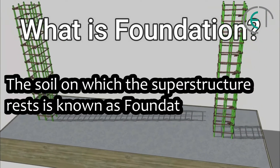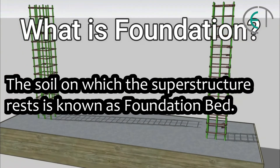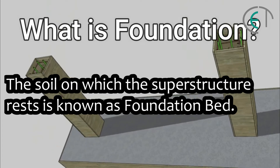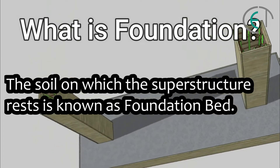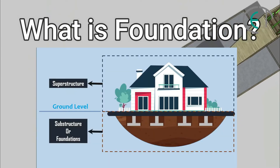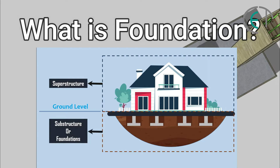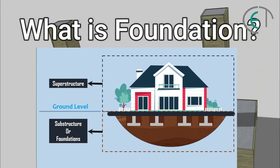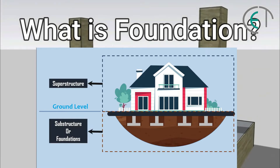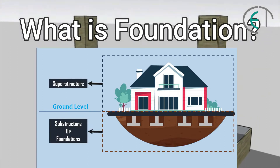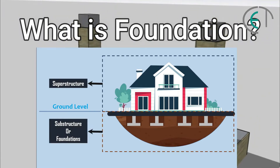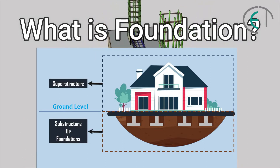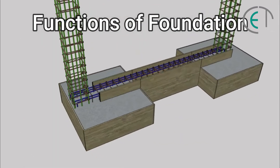The soil on which the superstructure rests is known as the foundation bed. In this photo we can see that the upper portion of the building is called the superstructure, and the lower portion below the ground level is called the substructure or foundation — sometimes we call it footing as well.